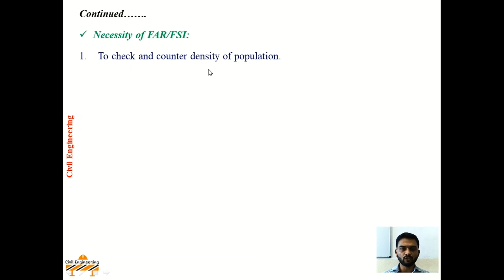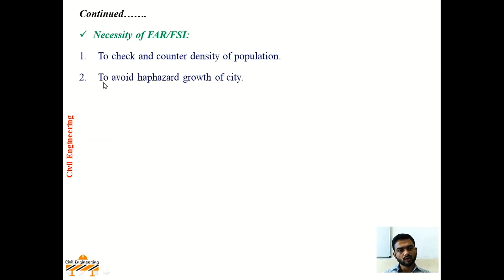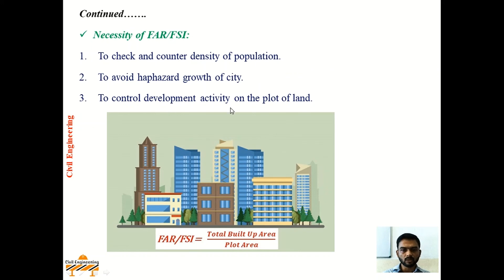The necessity of FSI or FAR is to check and control the density of population. If FSI is not followed, buildings will be constructed irrationally leading to unsustainable development, haphazard city growth, lack of essential services, disturbed health and hygienic conditions, and traffic congestion and pollution. FSI is necessary to control development activity on the plot of land, provide sustainable development, and ensure all residents get facilities like lighting, ventilation, electricity, water supply, and drainage system.